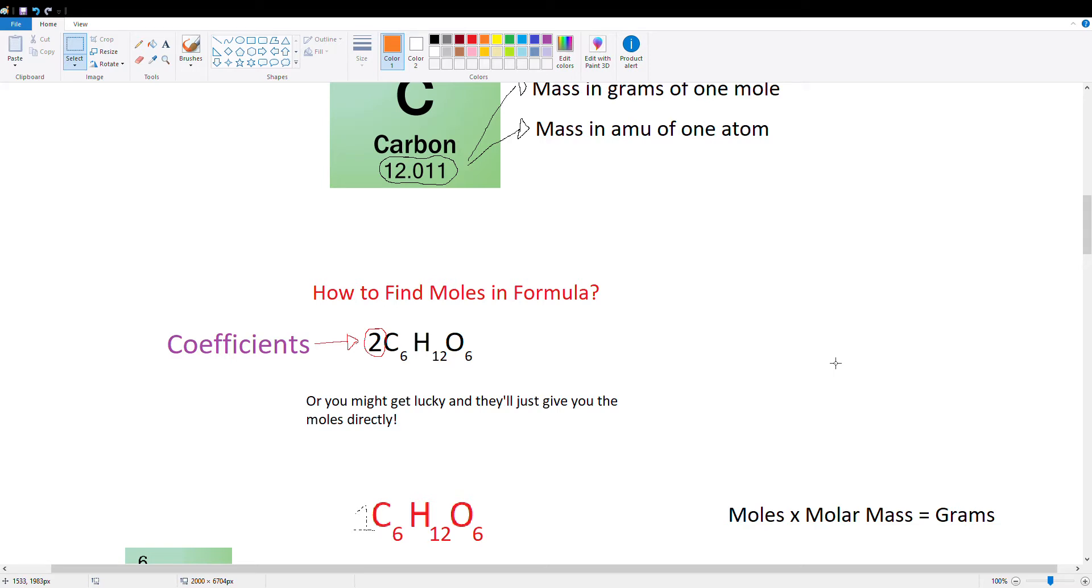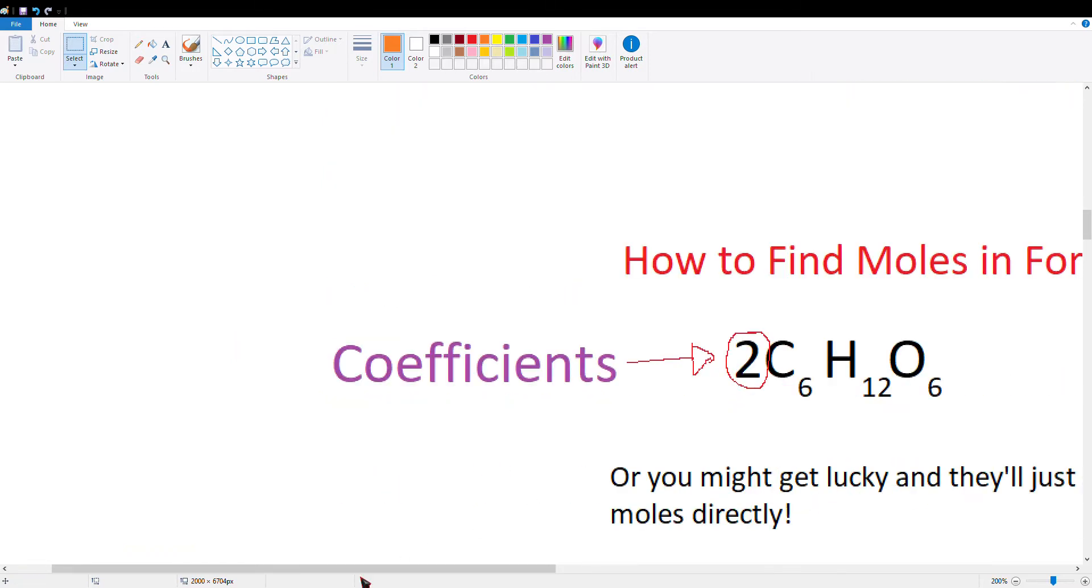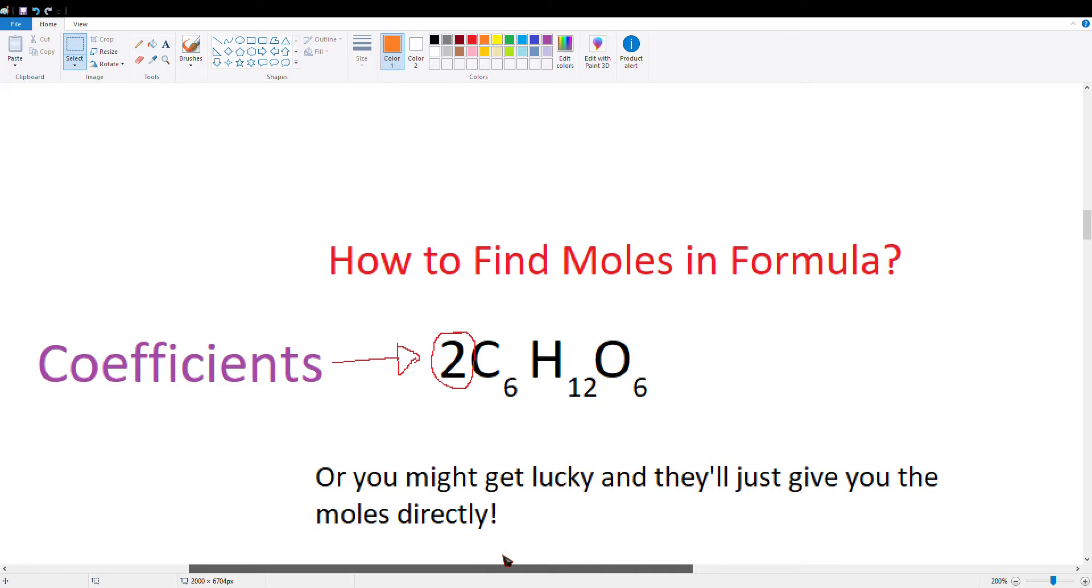So how exactly do we find the moles in the formula, unless they give it, of course? But you find the moles in the formula by looking at the coefficients. These coefficients tell you how many moles of this formula there are. So remember that this tells you the moles. And if there is no number there, it's assumed to be 1, as we'll look at later.